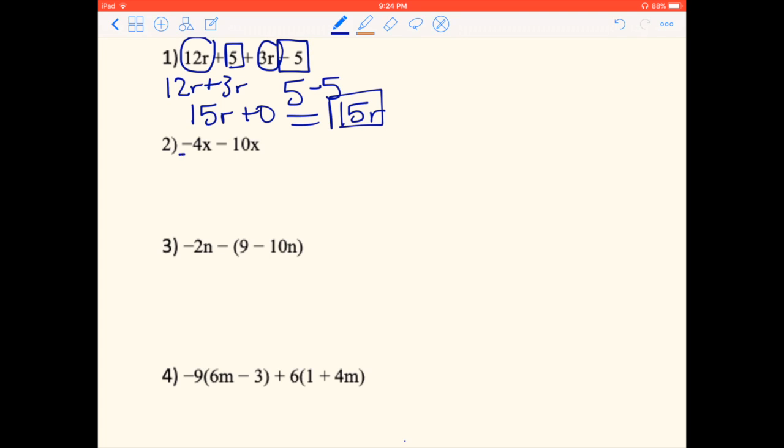In this next one, we have negative 4X and negative 10X, so they're both in the same family so we can combine them. We just look at those numbers in front. So negative 4 minus 10 gives us negative 14Xs. Always remember that variable at the end.